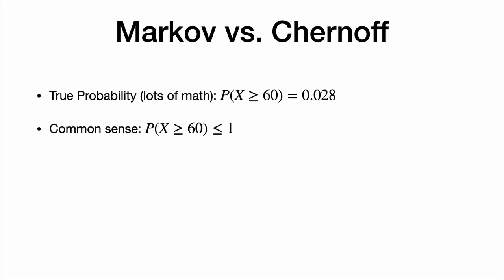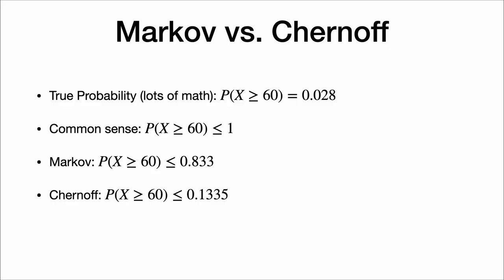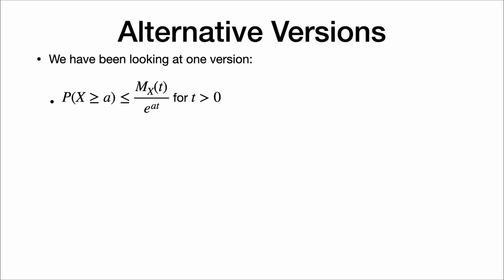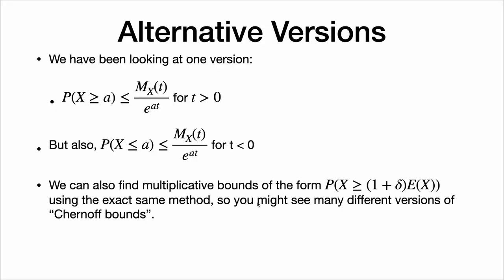So the true probability is 0.028. Common sense tells us the probability is less than or equal to 1. Markov's inequality tells us it's less than 0.833. But Chernoff's bound tells us the probability is less than 0.1335 — a much better bound, quite close to 0.028. We've been looking at upper bounds, but we could also find lower bounds with t being negative, or multiplicative bounds of the form where we ask what's the probability x is some multiple of its expected value. You might see Chernoff bounds written differently, but remember it's really about the method: multiply by t, apply the exponential function, and use Markov's inequality.